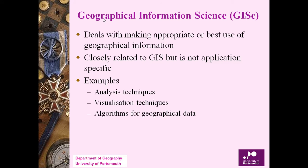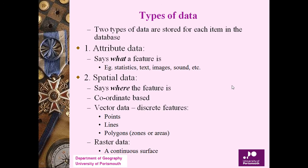Closely related to GIS is geographical information science. It deals with making the best use of geographical information but is not application-specific. It covers various analysis techniques, visualization techniques, and algorithms for geographic data. This is what distinguishes geographical information science from GIS as a tool.